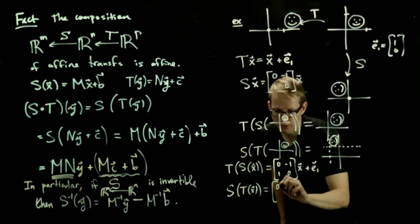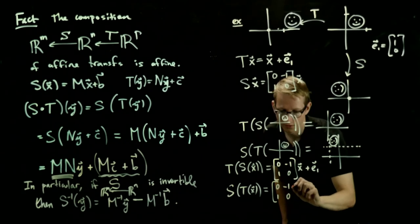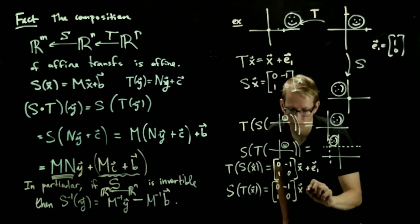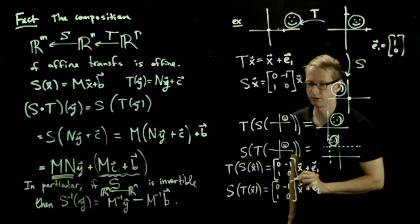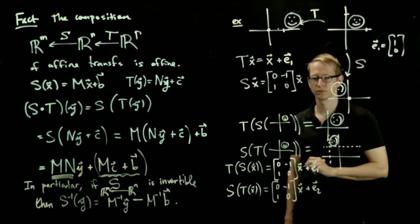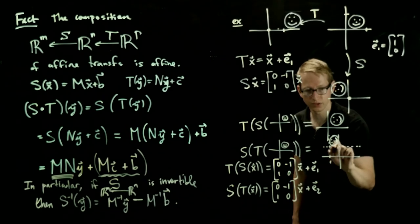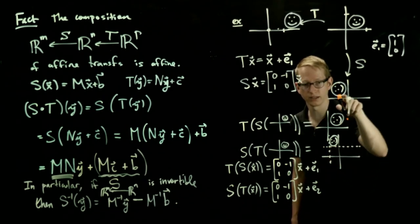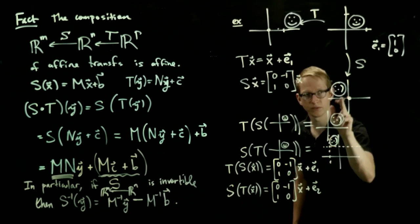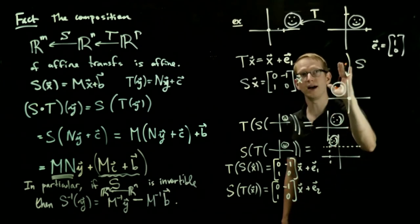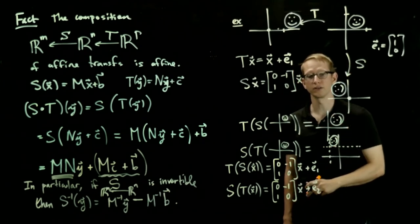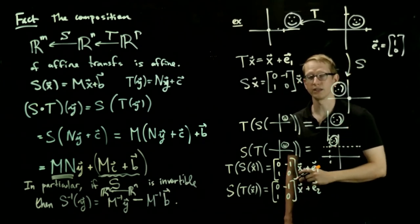So in this case, we get this instead. And this is consistent with this picture, because if we rotate first, our face ends up somewhere here, like in this picture. And then how do we get from this picture to this one? We translate up by a unit vector, by the unit vector E2.